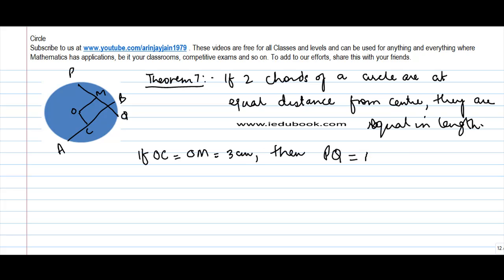Then PQ is equal to AB. So if the distance between these two—let's say O is the center of the circle.